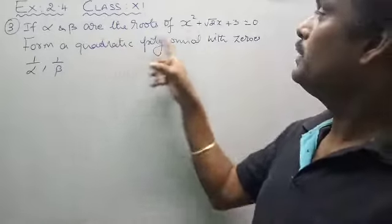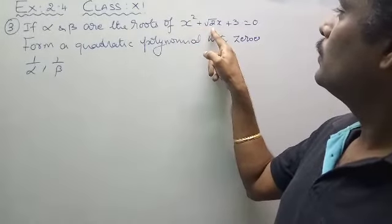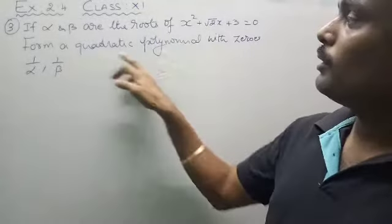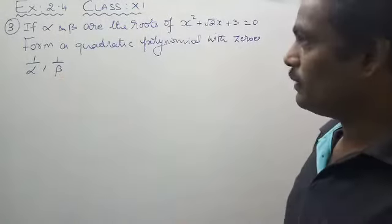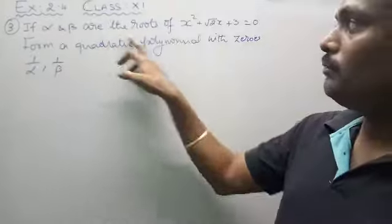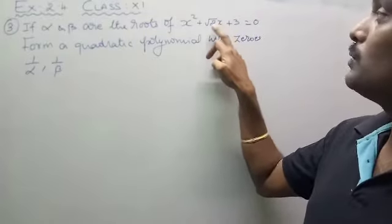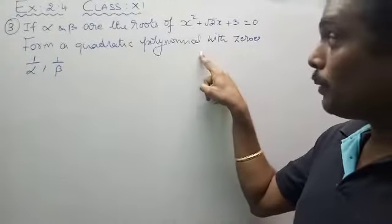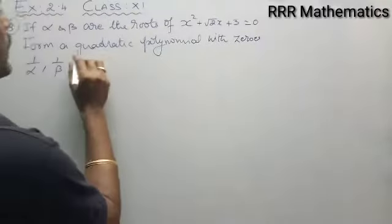We have: if alpha and beta are the roots of the equation x squared plus root 2 into x plus 3 equal to 0, form a quadratic polynomial with zeros 1 by alpha and 1 by beta. Alpha and beta are the roots of the quadratic equation x squared plus root 2 into x plus 3 equal to 0. You want to form a quadratic polynomial with zeros 1 by alpha and 1 by beta.